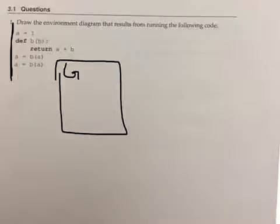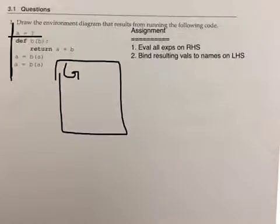Let's get started with the first line. This first line has the assignment A equals 1. Assignment has a particular rule involved with it. We need to evaluate all the expressions on the right hand side.